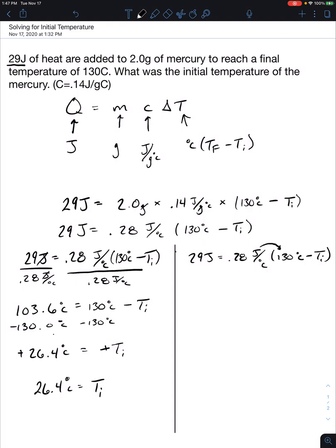So we're going to distribute that to Ti. So we're going to rewrite our equation and say that 29 joules is equal to 0.28 times 130 which is 36.4 and we're going to carry the unit of joules because the degrees Celsius cancel. It's not equal to minus 0.28 joules over degrees Celsius Ti.